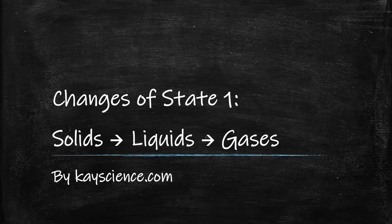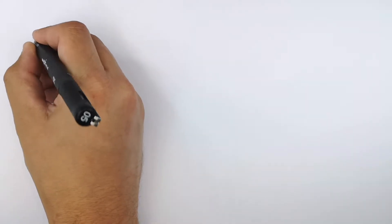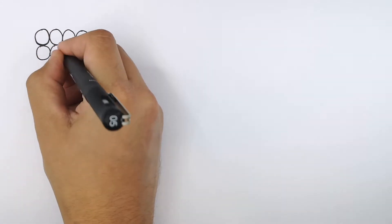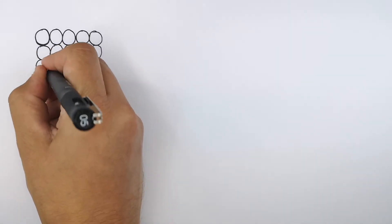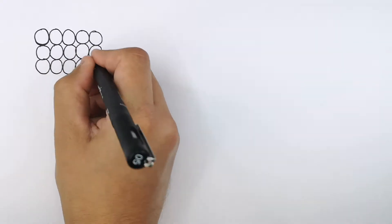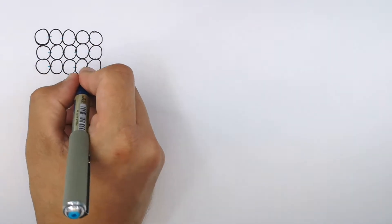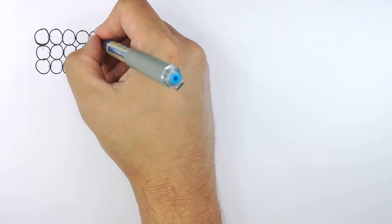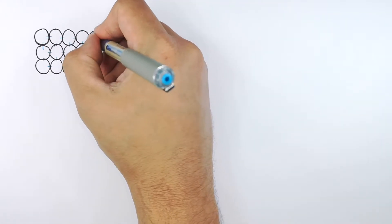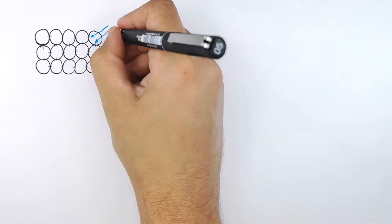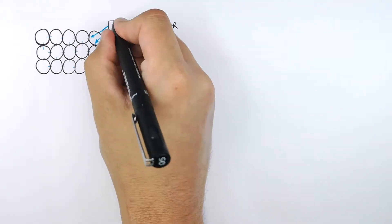Changing States: From Solids to Liquids to Gases, by CaseScience.com. What I'm drawing here is the particle arrangement for particles in a solid. They are in a regular arrangement. And what I'm drawing here are the intermolecular bonds between the particles in a solid.